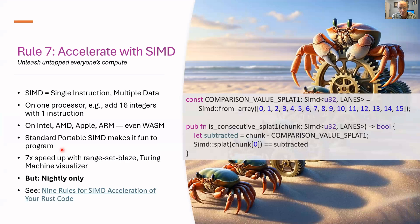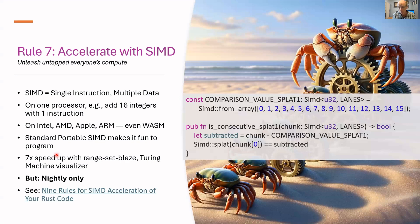Rule seven: SIMD. I've had good luck running portable SIMD on WASM, AMD, and ARM. I was getting a seven times speedup on a data structure crate and a Turing machine visualizer. The only downside to portable SIMD is that it's nightly-only and there are no definite plans to stabilize it, but it's really quite wonderful. For step-by-step advice on how to use it, see the article SIMD Acceleration of your Rust Code.